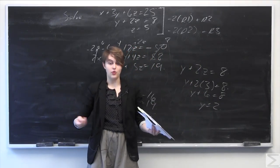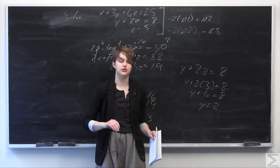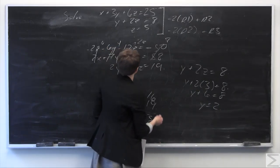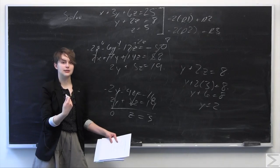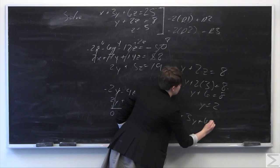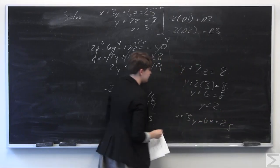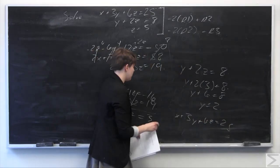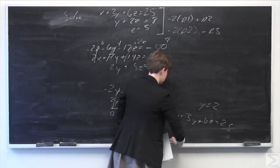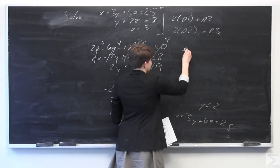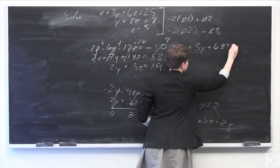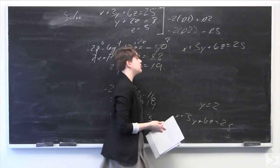Now we've solved for y and z. We're going to use back substitution one more time to solve for x in the first equation. The first equation says x plus 3y plus 6z equals 25. We know y equals 2.